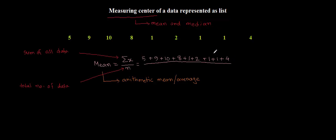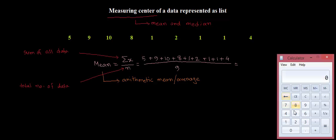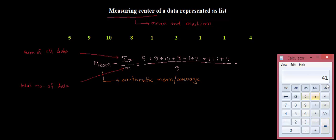Let's count how many data values we have: 1, 2, 3, 4, 5, 6, 7, 8, and 9. So we have a total of 9 data values. Let me use a calculator to find the sum. The sum of 5 plus 9 plus 10 plus 8 plus 1 plus 2 plus 1 plus 1 plus 4 comes to 41.